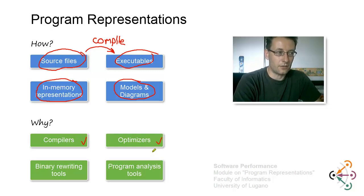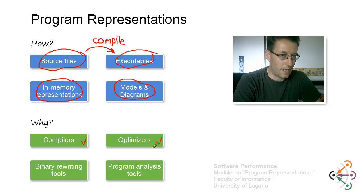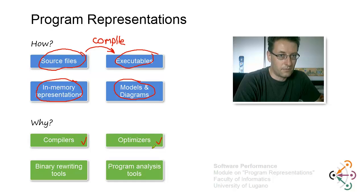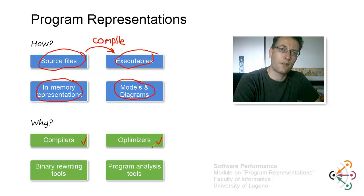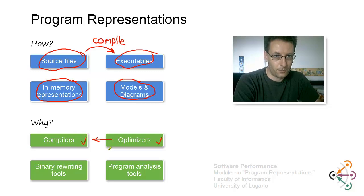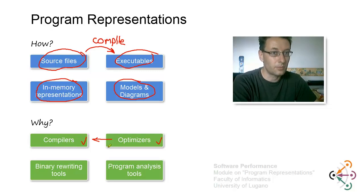Optimizers are another kind of tool that takes programs in some representation and produces programs in some representation, usually the same one. For example, you take a binary program, feed it to an optimizer, and that optimizer makes the program faster and outputs a faster version of it. Often optimizers are actually part of compilers — an optimizing compiler doesn't just translate from one language to another, it also makes the translated version reasonably fast.